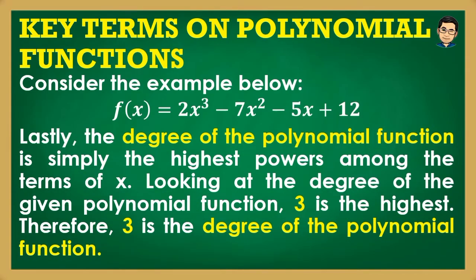The degree of the polynomial function is simply the highest power among the terms of x. Looking at f(x) = 2x³ − 7x² − 5x + 12, the exponents are 3, 2, 1, and 0 (constant term). Therefore, 3 is the degree of the polynomial function. This given function is an example of a cubic function because its highest degree or power is 3.